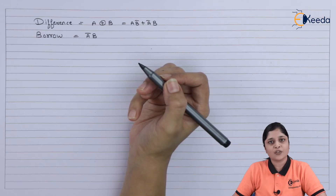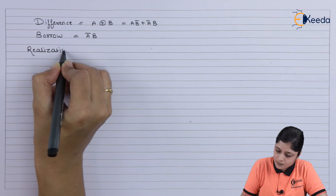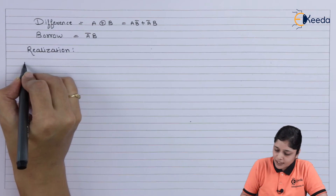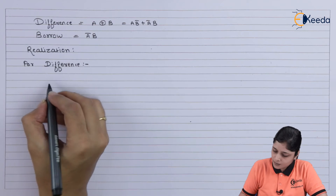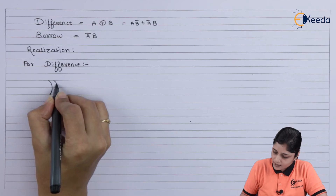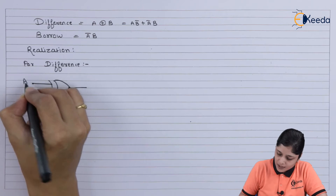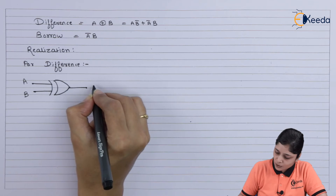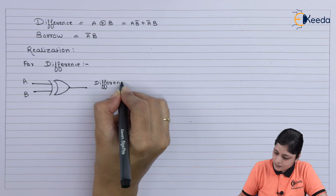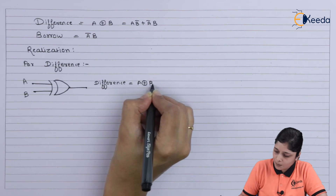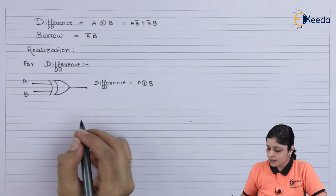Now we will design the circuit for difference — the realization for difference. We draw an XOR gate with two inputs A and B, and finally we get difference as A XOR B.